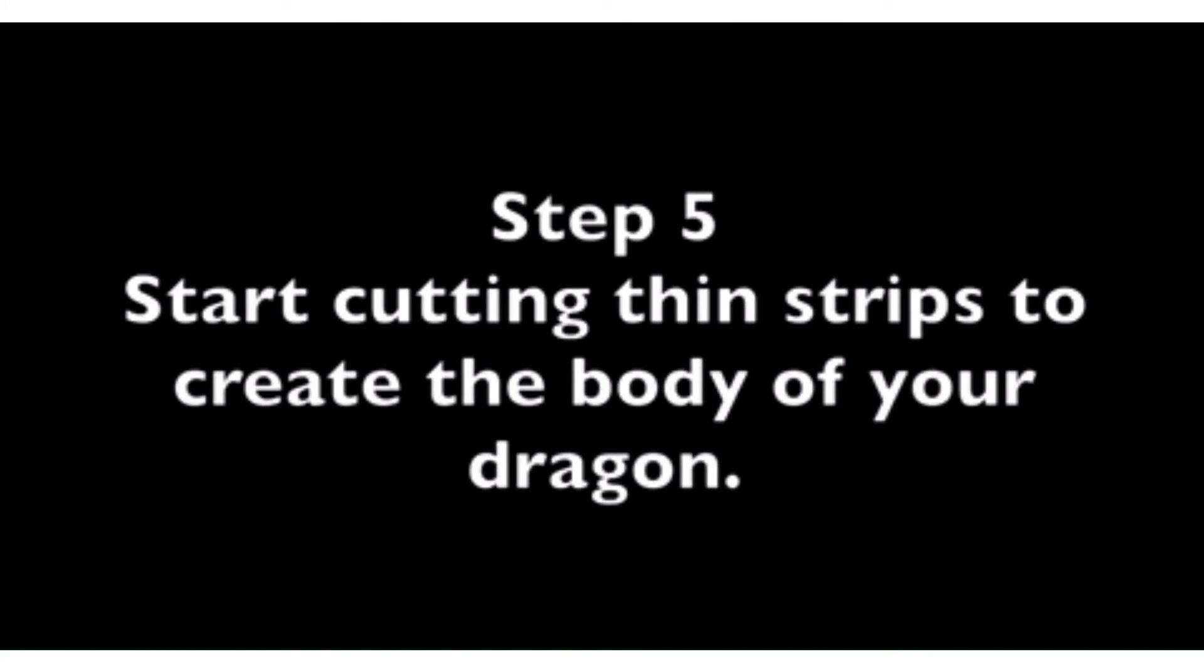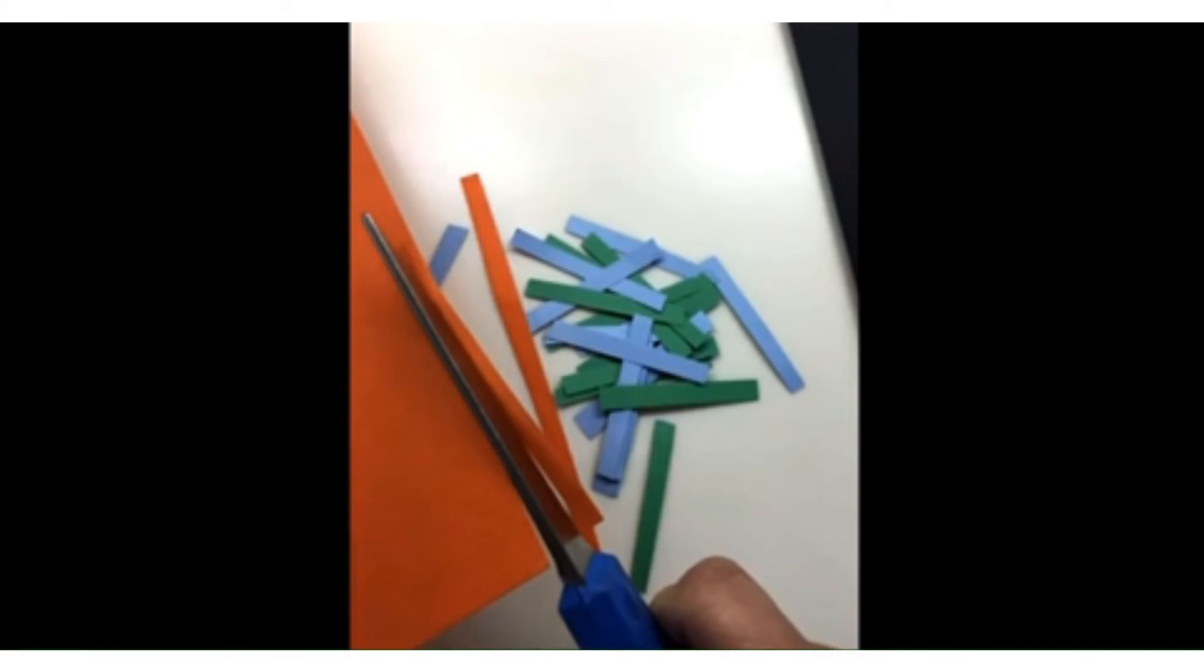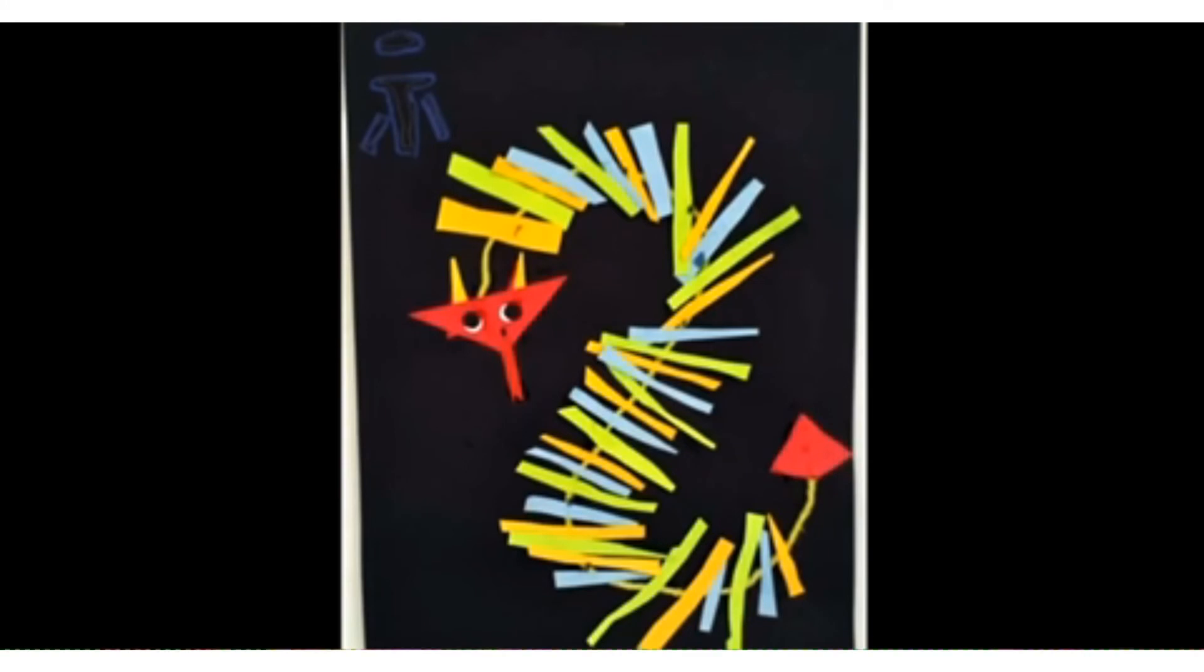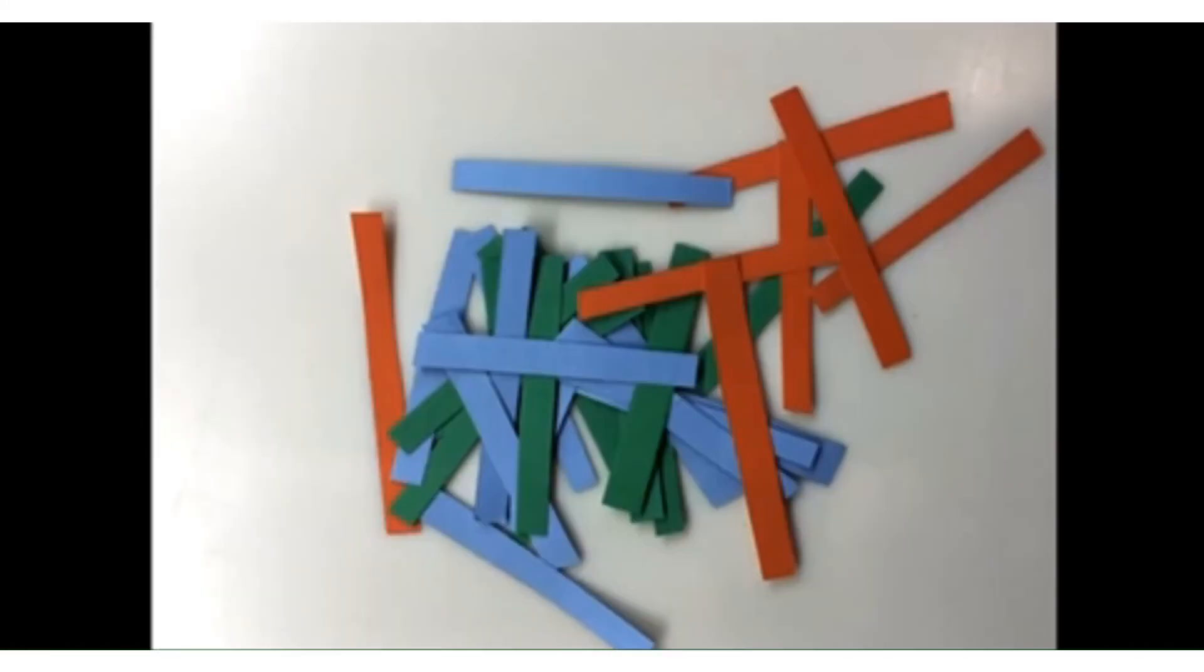Step 5. Start cutting thin strips to create the body of your dragon. You can choose several different colors for these strips. Make sure you hold the side of the paper that you are not cutting so that your fingers are not too close to your scissors. Feel free to be creative with this part of your dragon. If you would prefer to do other kinds of shapes, you can do that. Just make sure to remember that we don't have a lot of time, so do not make your shapes too intricate.